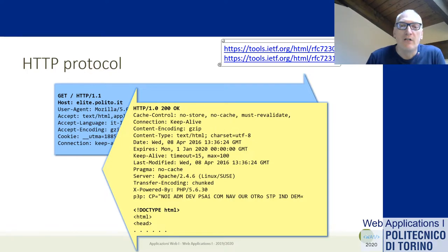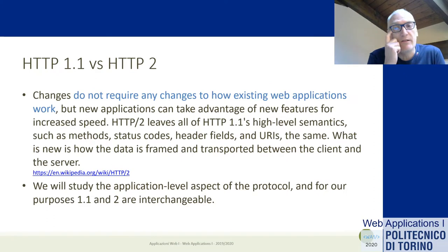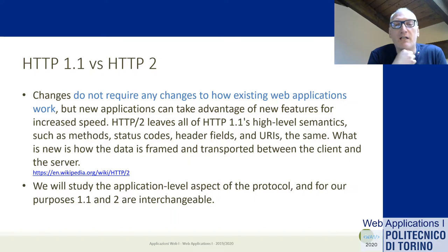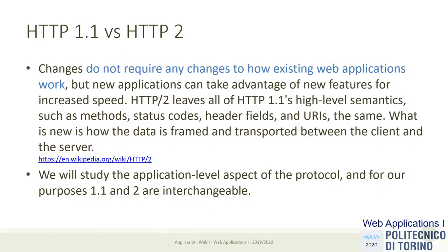Our main discussion will be about HTTP 1.1, which is mainly the protocol on which most of the internet is running today. Even though HTTP 2 is growing in presence on websites, the evolution from HTTP 1.1 to HTTP 2 is mainly at the transport level. HTTP 2 offers optimizations concerning multiplexing, push of information, and security encryption, while from the application or programmer point of view there is very little difference.